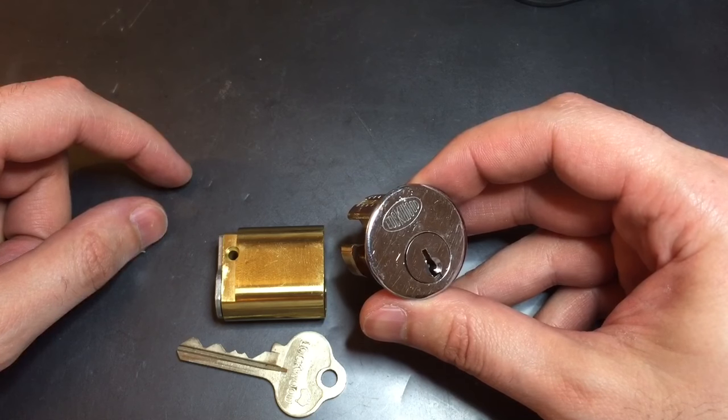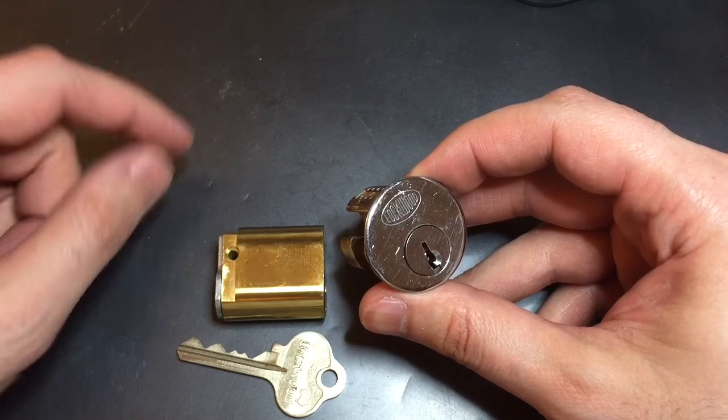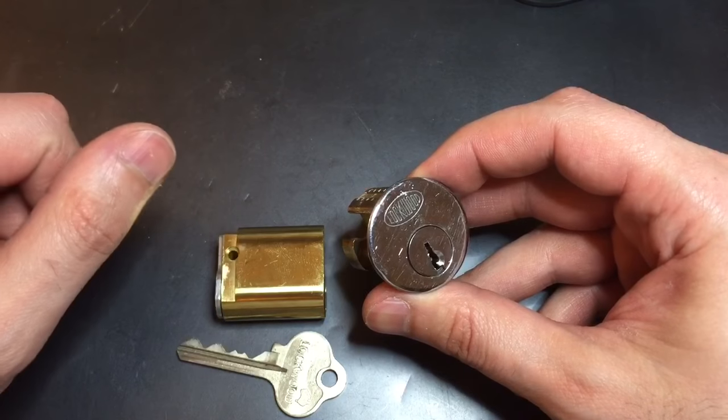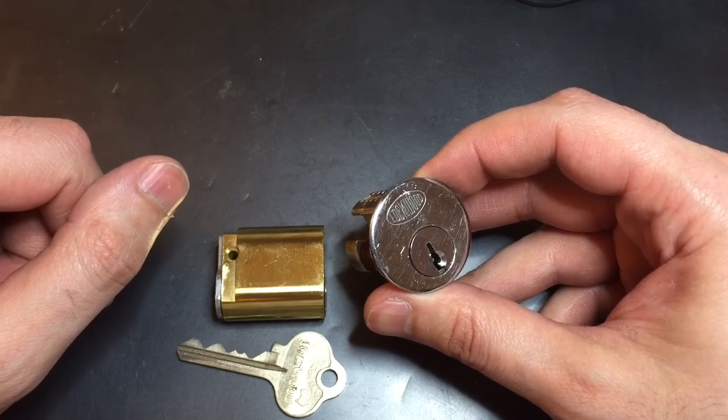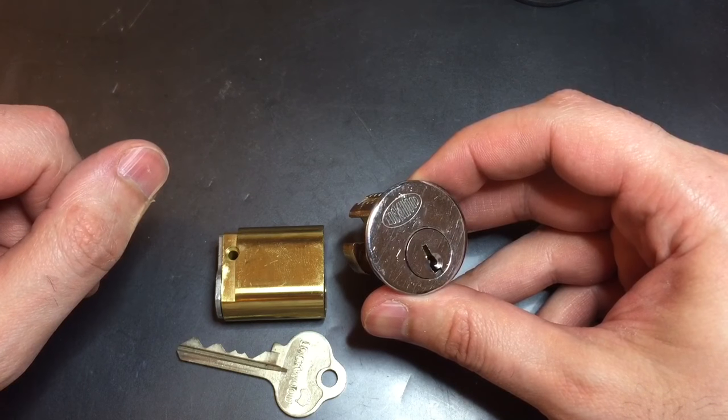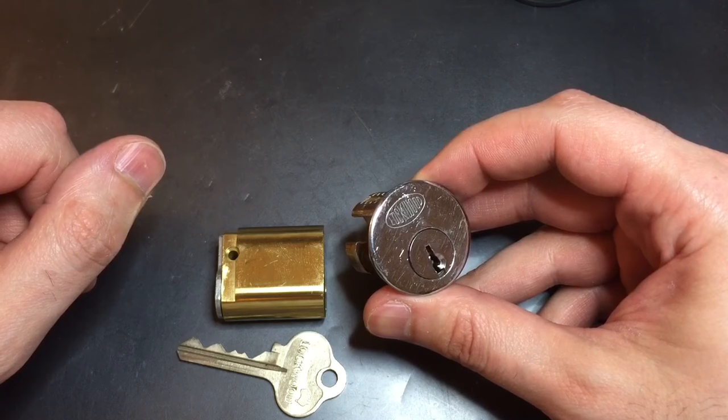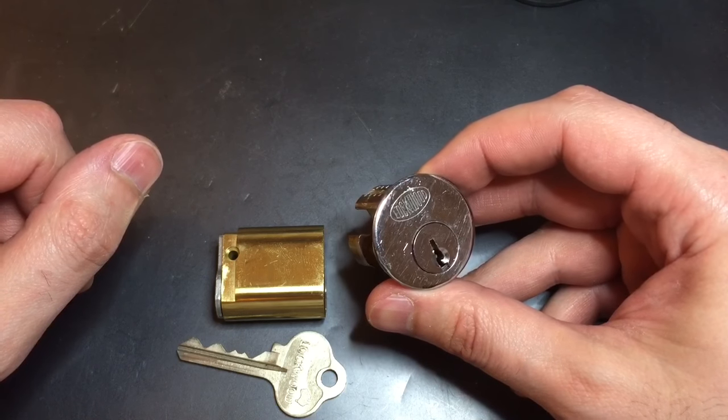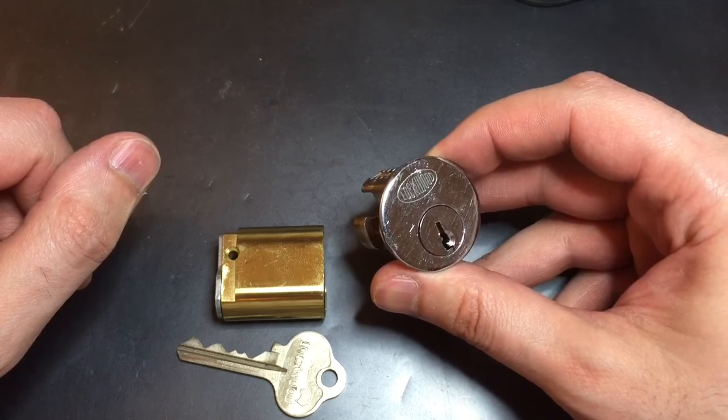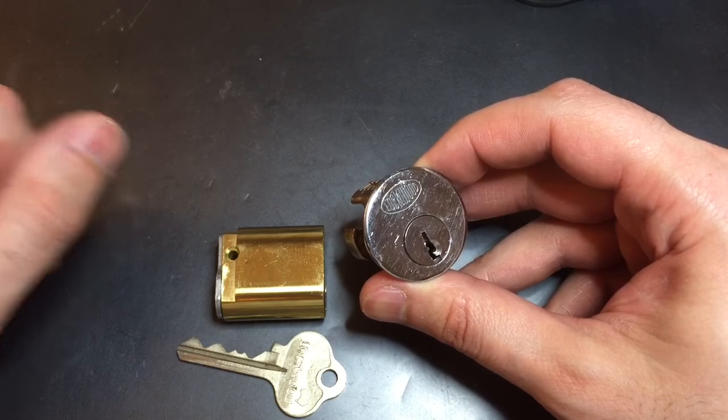So this will be a three-part video. In the next part we will take a look at the innards of this Lockwood rim cylinder, and then if everything works out, part three will be a quick pick and gut. So I will take this lock apart and then restart the video.